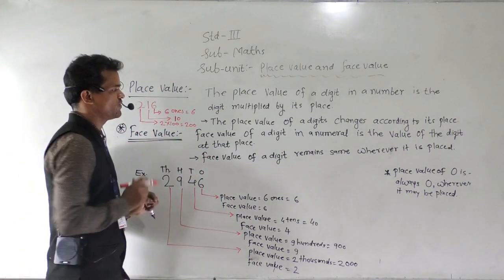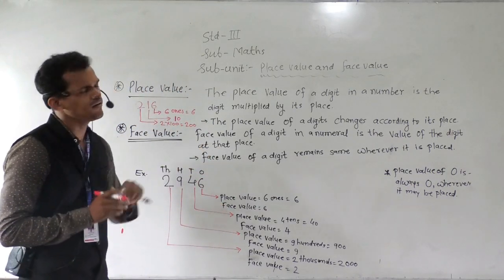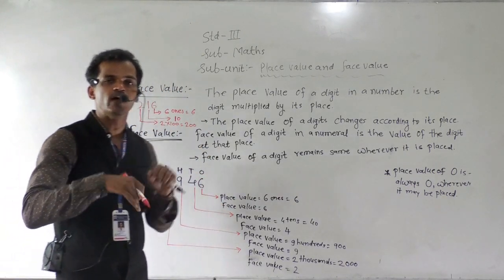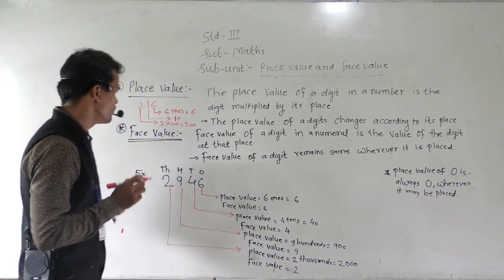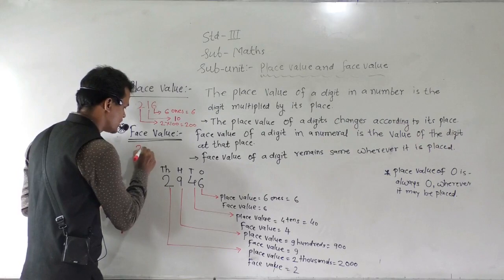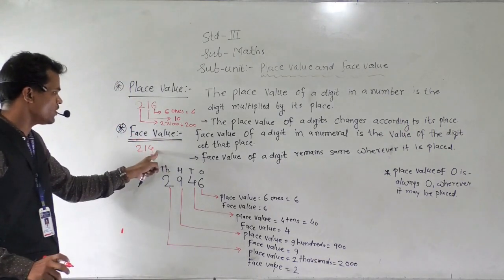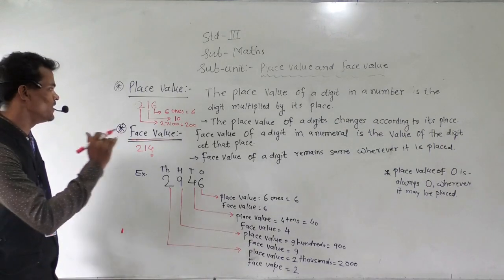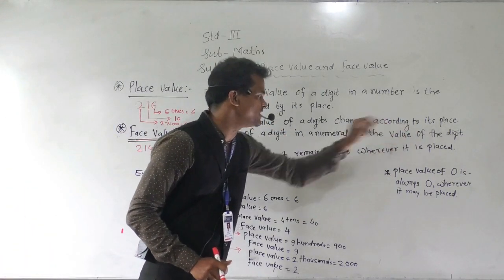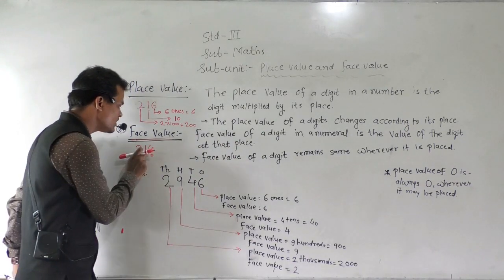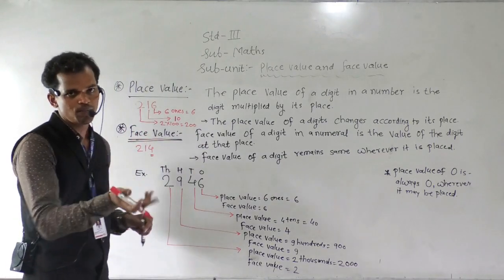Then what is meant by face value? The face value of a digit in a number is the value of the digit at that place — it does not change according to its position; it is simply the value of that digit itself. For example, in the number 214, the face value of 4 is 4 only. So face value is nothing but that same digit.